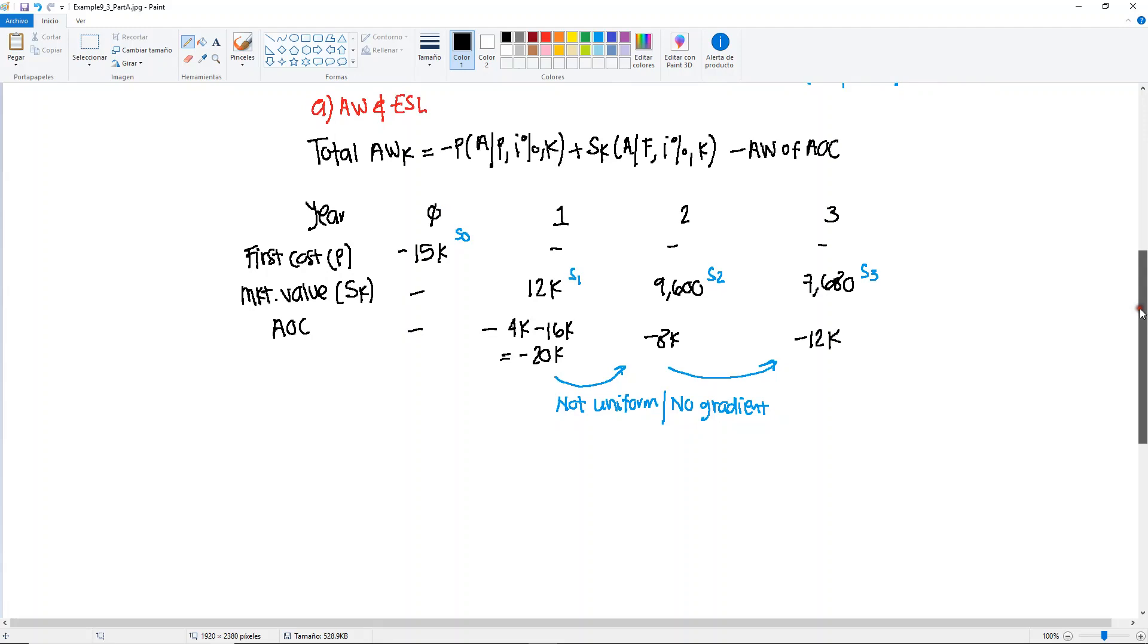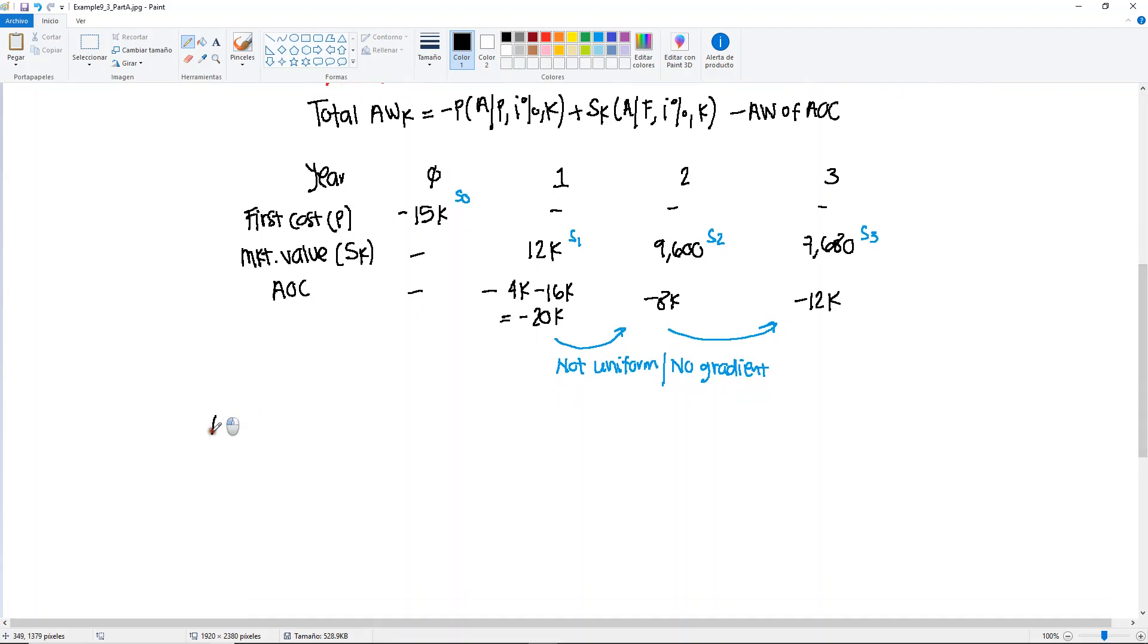Okay, so now let's calculate the annual worth for each individual year. Annual worth of year one would be minus $15,000, find A given P at 10% for year one, plus salvage value in year one, $12K, find A given F at 10% for year one. And at this point, then again, we don't know what's going to happen next. We only have this piece of information. So let's just subtract the minus $20,000. This will give us a total of minus $24,500 for year one.